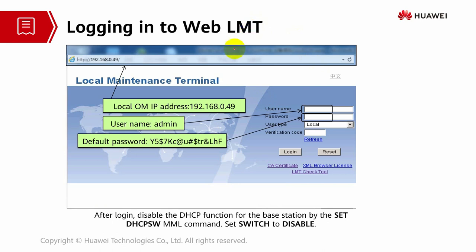To log into the web LMT, use the local IP address, the username, and the default password. This default password can be changed later since it's too long and difficult to remember. When you log in for the first time and are required to change the password, you can change it to a simpler one — but remember to save it somewhere, as engineers often forget it across many base stations. After login, disable the DHCP function of the base station by setting the relevant command switch to disable so it doesn't interrupt the transport service. Once commissioning is complete, set it back to enable.